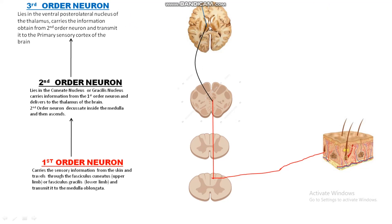The second-order neuron ascends and synapses with the third-order neuron. The third-order neuron carries those signals obtained from the second-order neuron and transmits them to the primary sensory cortex of the brain. To summarize: signals from the skin are first carried by the first-order neuron, which travels through the fasciculus gracilis (for lower limb information). The first-order neuron ascends inside the spinal cord, synapses with the second-order neuron in the gracilis nucleus of the medulla oblongata. The second-order neuron then decussates, ascends, and synapses with the third-order neuron in the ventral posterior lateral nucleus of the thalamus. The third-order neuron then carries those signals to the primary sensory cortex of the brain.